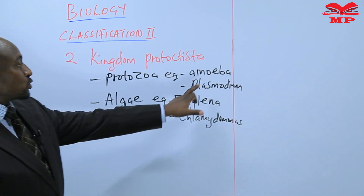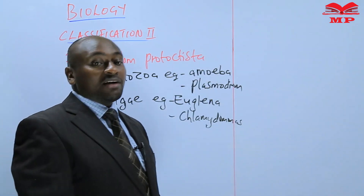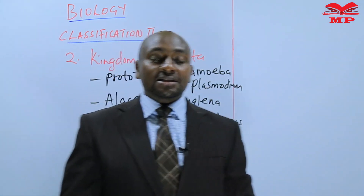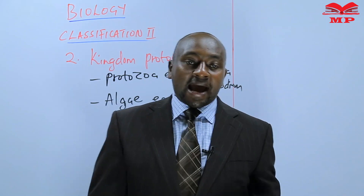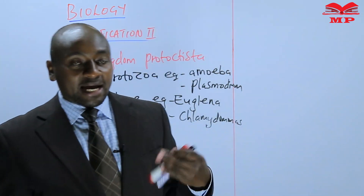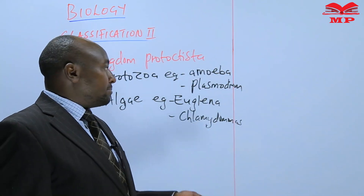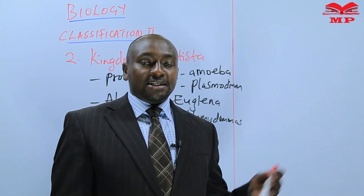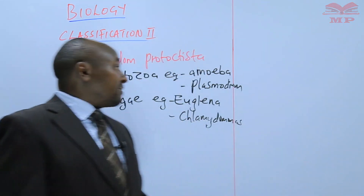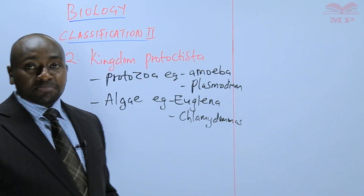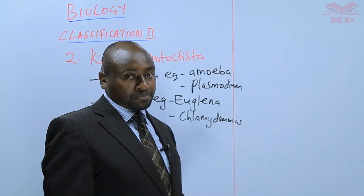For protozoa, we have things like amoeba. We know that there are some diseases that are caused by amoeba, such as amoebic dysentery. Amoebic dysentery is a disease caused by amoeba. We also have a disease such as malaria, which is caused by Plasmodium.